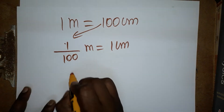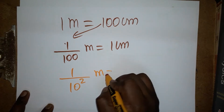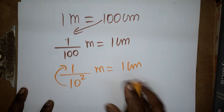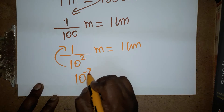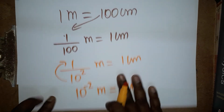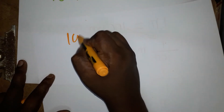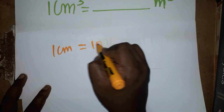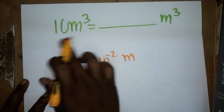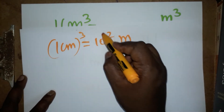We can write 100 as 10 power 2, so 1 divided by 10 power 2 meter equals 1 centimeter. Bringing 10 power 2 to the numerator gives 10 power minus 2 meter equals 1 centimeter. So, 1 centimeter is equal to 10 power minus 2 meter.